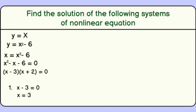For the second factor, x plus 2 equals 0, so x equals negative 2. Now, we can find the corresponding values of y using either of the original equations.